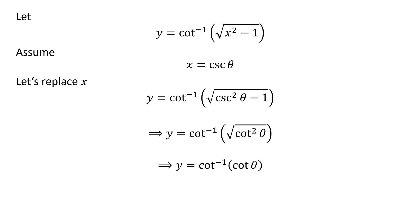We know square root of square of cotangent of theta is equal to cotangent of theta. So, y is equal to inverse of cotangent of cotangent of theta.